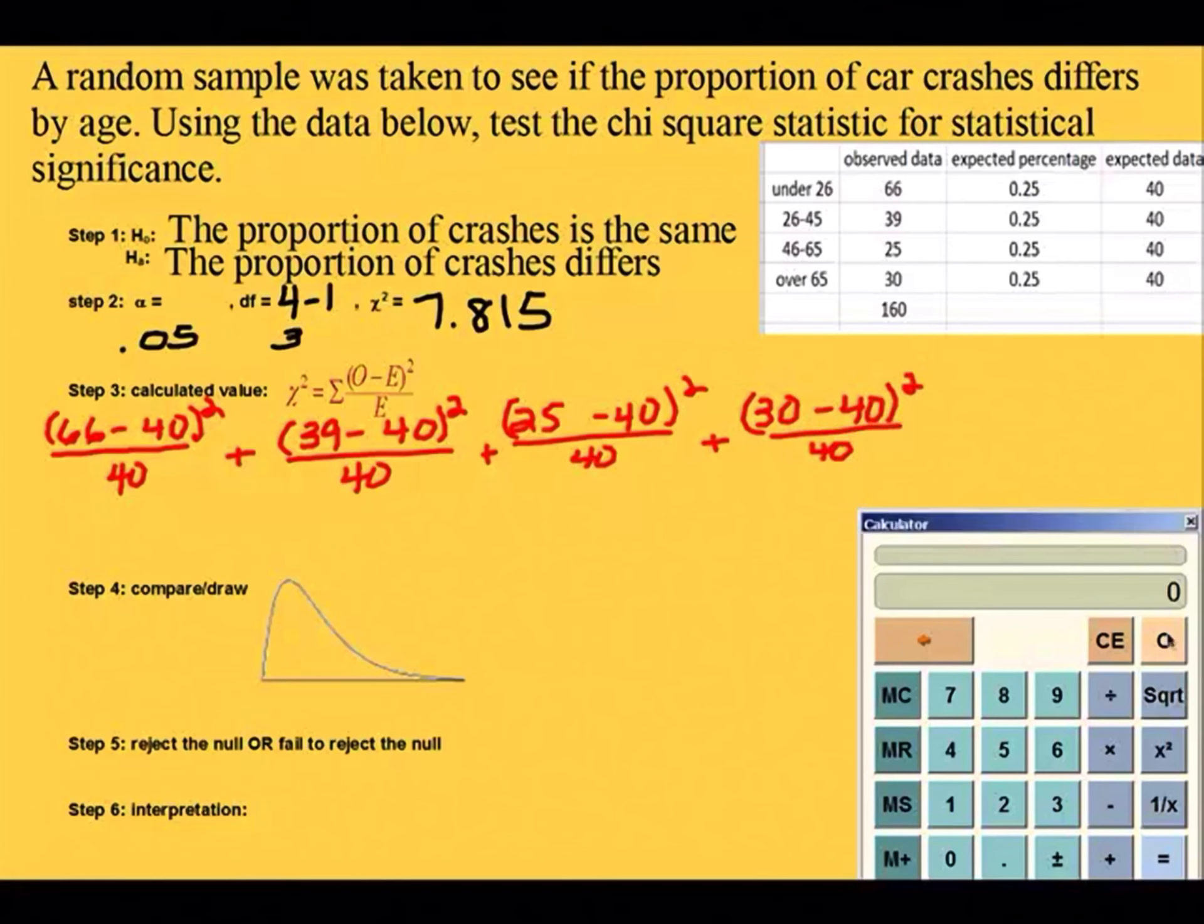Now we're actually going to do the calculations. With our trusty calculator, we're going to take 66 minus 40 and get 26. 26 squared, and then divide that by 40: 16.9. 39 minus 40 is 1. 1 divided by 40 is 0.025. 25 minus 40 is 15. 15 squared is 225, divided by 40 is 5.625. Finally, 30 minus 40 is 10. 10 squared is 100, divided by 40 would be 2.5. The sigma in the formula means add, so I'm going to add all those together.